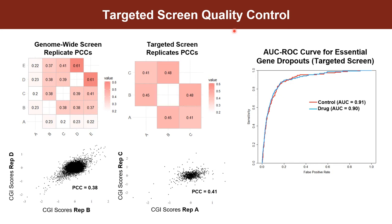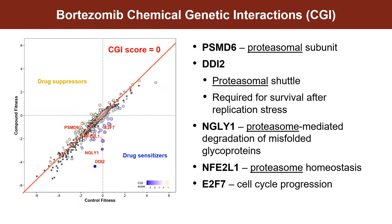On this slide, I'm showing some quality control plots for our screens. On the very left, we have five genome-wide bortezomib screens, and I calculated Pearson correlation coefficients among their CGI scores for each pair of replicates. I also did the same for the triplicates of targeted screens that we have. You can see that on the targeted screen side, you have better correlation than the genome-wide screens. On the far right, we set up an essential gene standard — these are genes that we expect to drop out over the course of a CRISPR screen — and measured how well these are being picked up by our screens. With this AUC-ROC curve, you can see that whether you have a control or a drug arm, both are doing pretty well in our targeted screens.